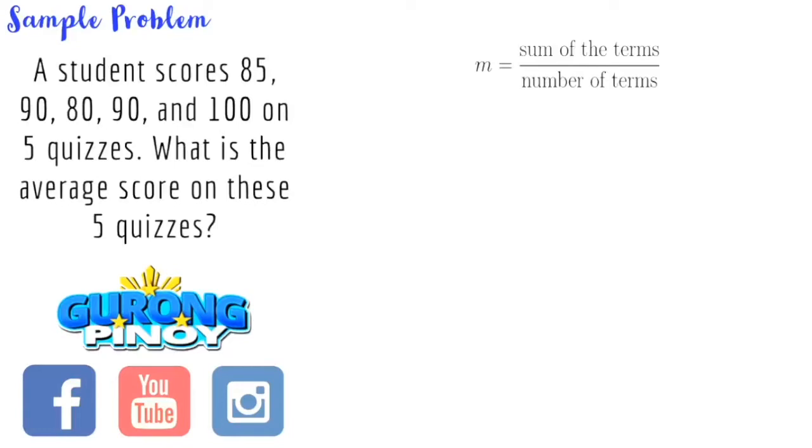When we're talking about terms here, we're simply talking of the numbers. So sum of the terms, that would be the sum of the numbers that we have in this case, the sum of the scores divided by the number of the scores. So we get the sum of the scores, which is 85 plus 90 plus 80 plus 90 plus 100. We get the sum and that would be 445. Now after taking the sum, the average formula tells us to divide it by the number of terms. So we divide 445 by 5.